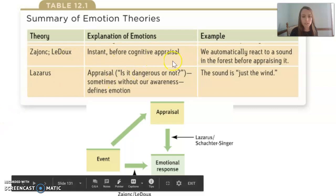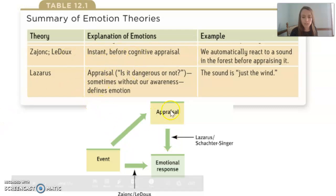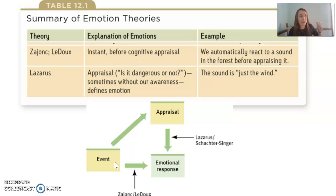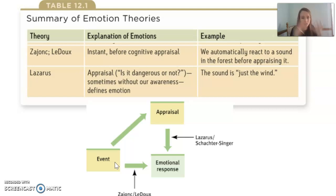The Zajonc and LeDoux explanation: they say we don't even realize that we have the emotion. The emotion happens right when, say, something rustles or moves out in the trees — you have a jolt of fear automatically before you even process that this is a scary situation. They would say it happens the moment you hear that sound: you jump, and you don't even think about whether this is a scary situation — the emotion happens just unconsciously.